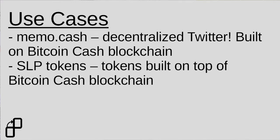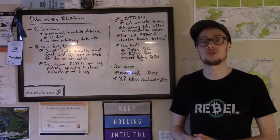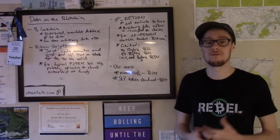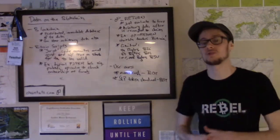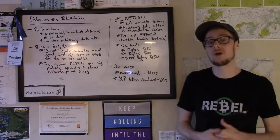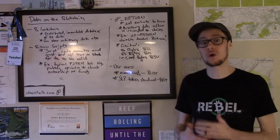One is called memo.cash, and this is essentially a decentralized Twitter. It allows you to include small messages in Bitcoin Cash blocks, and that means that the messages you send out — unlike Twitter — cannot be censored and can never be changed. So you can say something about a cause you feel very strongly about and that could never be censored, because it's part of this overall decentralized and censorship-resistant network of Bitcoin Cash.